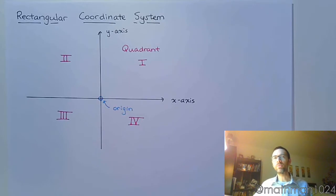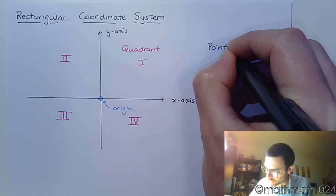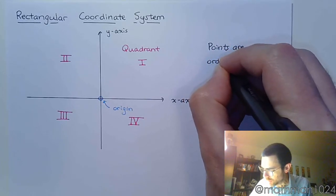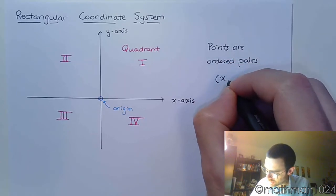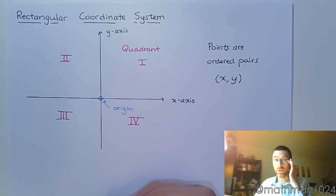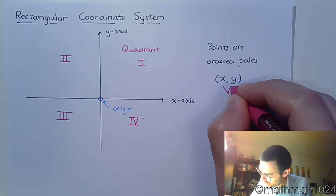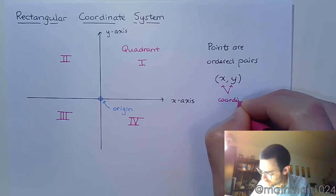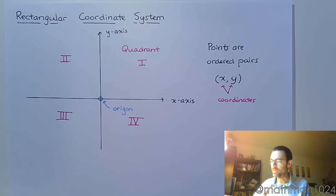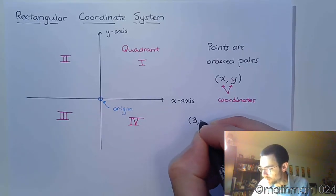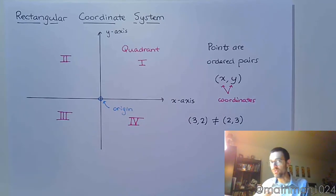When we plot points, we have to remember that points are given as ordered pairs. Points are ordered pairs — they look like x, y. The order is: the first coordinate is x and the second coordinate is y. Each of these pieces are called coordinates, and together they form our ordered pair.